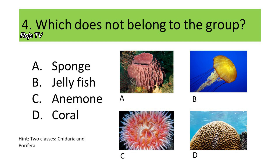These organisms belong to two classes: either Cnidaria or Porifera. If your answer is sponge, letter A, you are correct. Sponges have a porous body, that's why they belong to Phylum Porifera, while the jellyfish, anemones, and corals belong to Phylum Cnidaria because they have stinging cells.